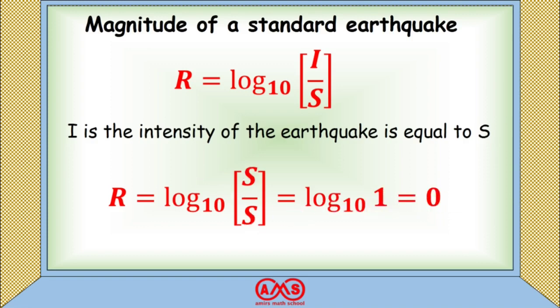So the magnitude of a standard earthquake — that is, the smallest detectable earthquake — is 0.